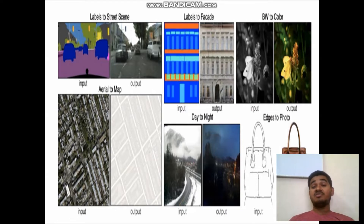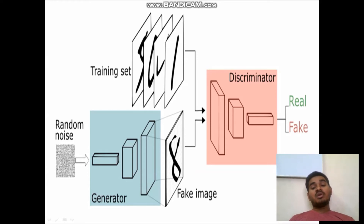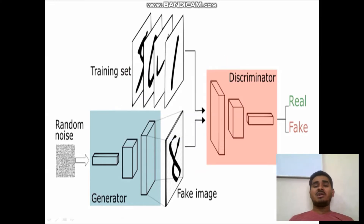These are the varieties of applications which can be created with GANs and how they actually work. When we create random noise in the training set, the generator creates a fake image from the original training set. Consider the training set as a collection of images of one particular thing, like a dog. The generator tries to create an image using the training data — it may be a fake or real image. The discriminator's job is to identify whether the generated image is real or fake. The generator always tries to create a fake image because its main objective is to fool the discriminator, not to support it.